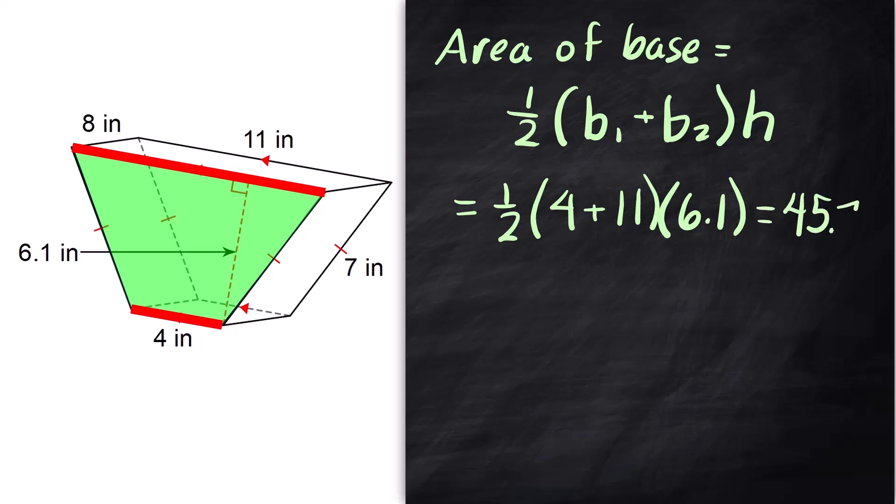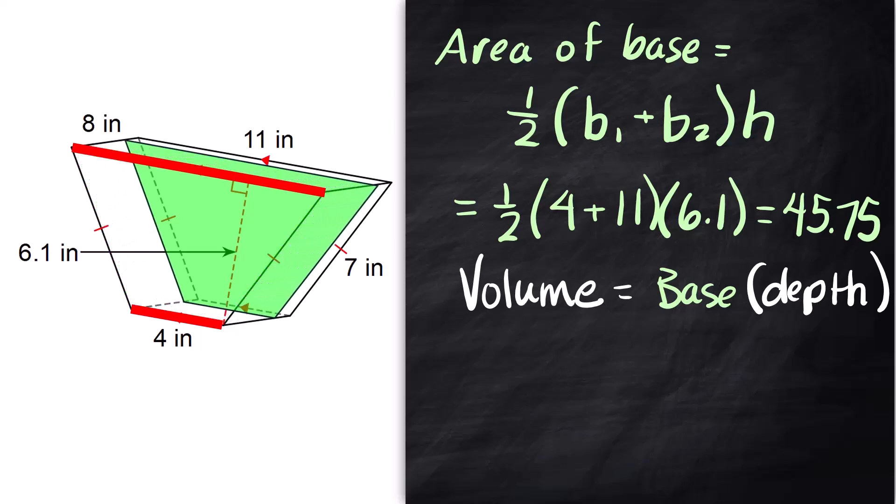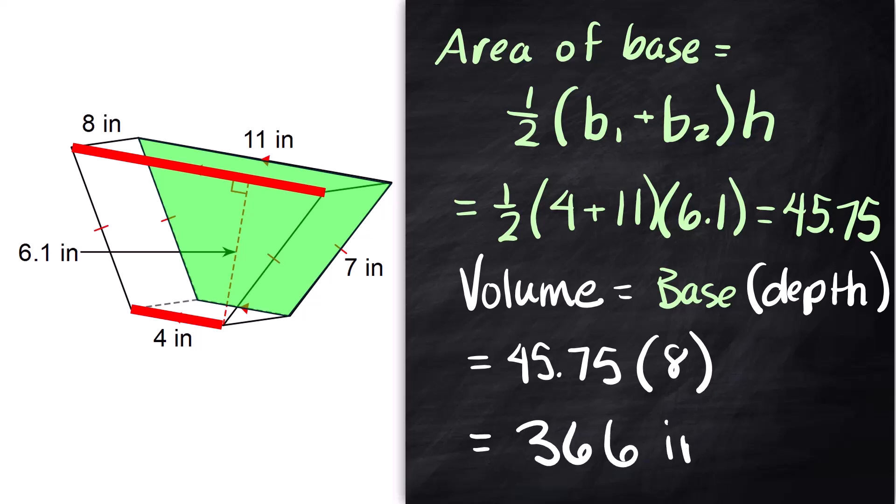It's 45.75. Volume big idea you find the area of the base and you multiply it times the depth or the height however you want whichever word makes sense for you in this case. I'm going to use that 8 right there. That's the trapezoid to the other trapezoid the distance it has to travel is 8 so 45.75 times the 8 and that turns out to be 366 inches cubed.